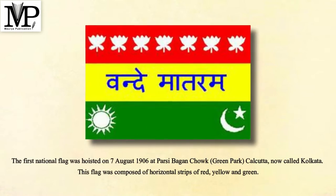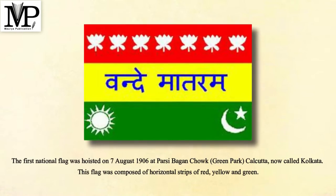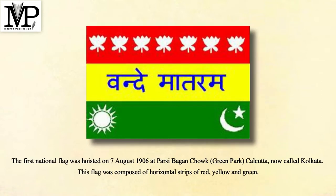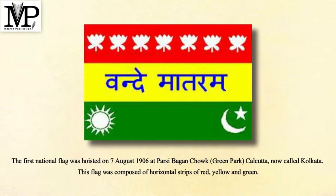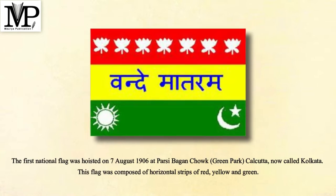The first national flag was hoisted on the 7th of August 1906 at Parsi Bagan Chauk, Green Park, Calcutta, now called Kolkata. This flag was composed of horizontal strips of red, yellow and green.